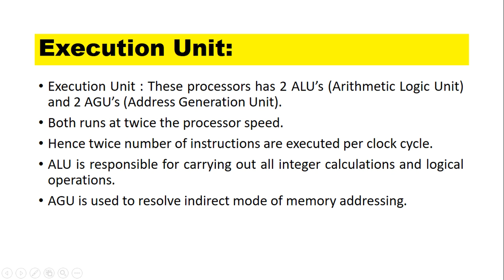The Execution Unit in these processors has two ALUs (Arithmetic Logic Units) and two AGUs (Address Generation Units). Both run at twice the processor speed, hence twice the number of instructions is executed per clock cycle. The ALU is responsible for carrying out all integer calculations and logical operations. The AGU is used to resolve the indirect mode of memory address.